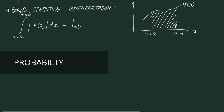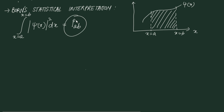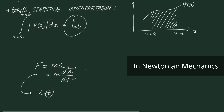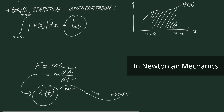In Newtonian mechanics, the fundamental equation is Newton's second law F = ma = m·d²r/dt². The solution gives us the position vector r(t), which contains all information about where the particle was in the past and where it will be in the future. So Newton's second law gives us a definite position of the particle.